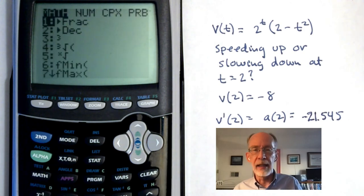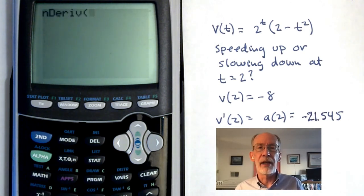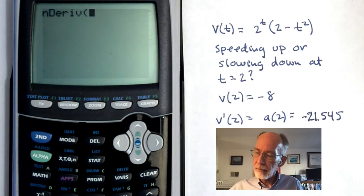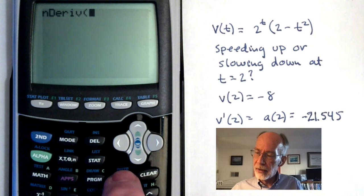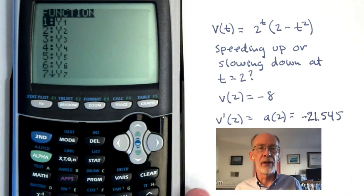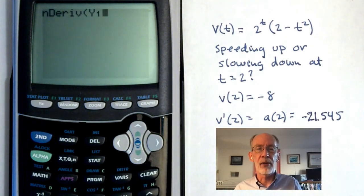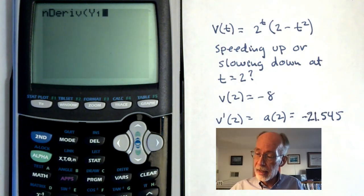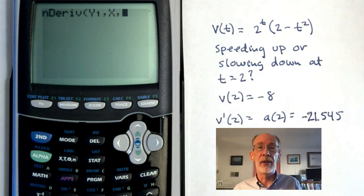So if I hit math and 8, instead of that little template that you'd see as though you were writing it out, I see just this command n-deriv. And I can enter then the function, either by referencing something that I'd stored as a y, or just by typing in the syntax, comma, x, comma, whatever the value is.